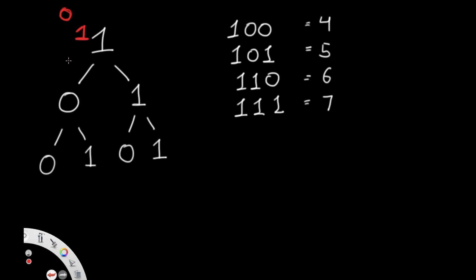Moving left to the node with value 0: 2×1 + 0 = 2, so our sum is now 2. Moving left again to the node with value 0: 2×2 + 0 = 4. So when we take this entire path 1,0,0, we end up with a sum of 4, which is exactly right.